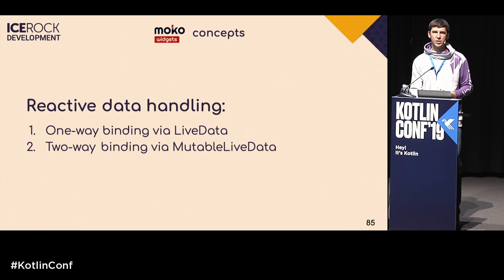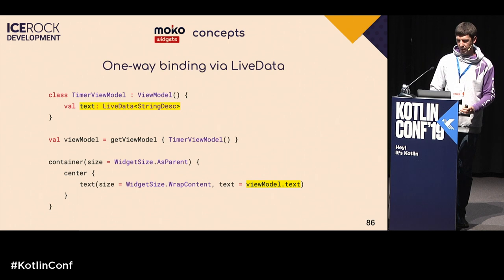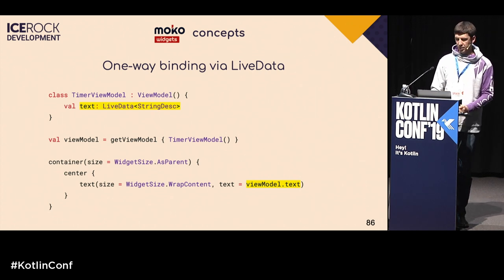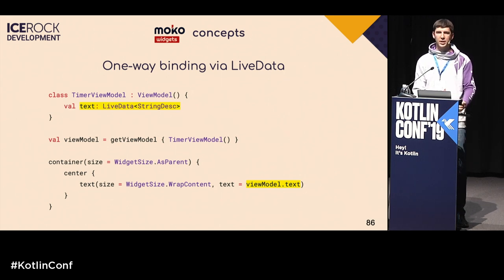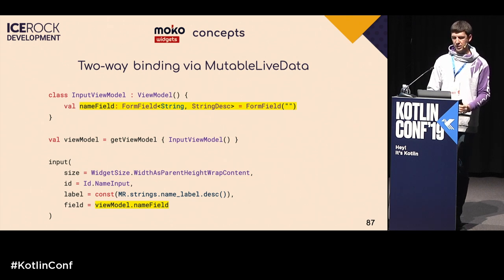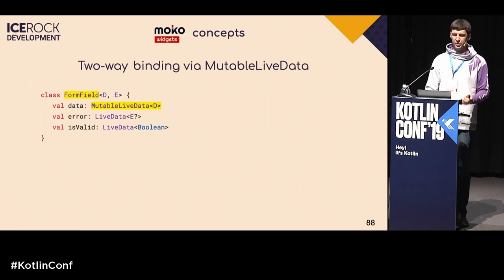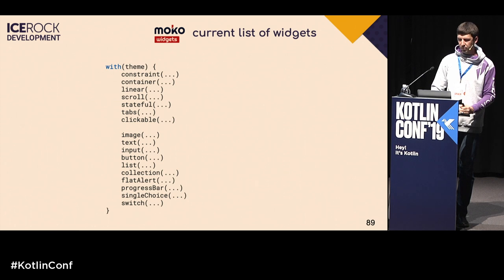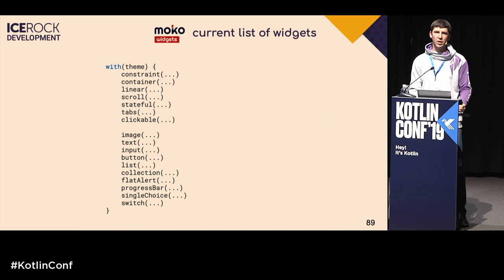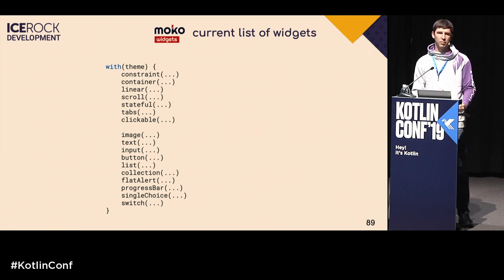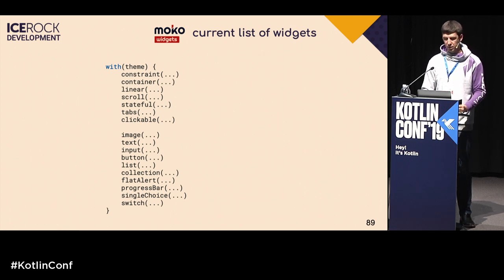Data management has two cases: one-way binding and two-way binding. In one-way binding, we define a view model, get the view model, and bind an element of that model to a text widget. In two-way binding, we define a view model, get the view model, and in the input widget we bind a name field from the view model — where FormField is a combination of LiveData. Currently available widgets include nested container widgets: constrained, container, linear, scroll, and others; plus simple element widgets: image, text, input, button, list, and more.